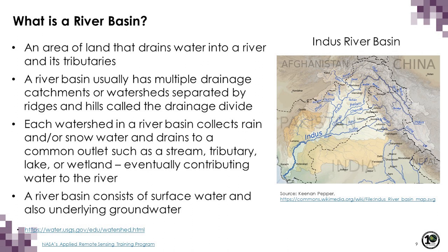Looking at the Indus River Basin as an example, you can see the main Indus River with all its tributaries and small streams draining into it — this entire area constitutes the basin. A river basin usually has multiple drainage catchments. Watersheds are separated by ridges and hills called drainage divides. Each watershed in the river basin collects rain and snow water and drains to a common outlet, which could be a stream, tributary, lake, or wetland, eventually contributing to the main river.